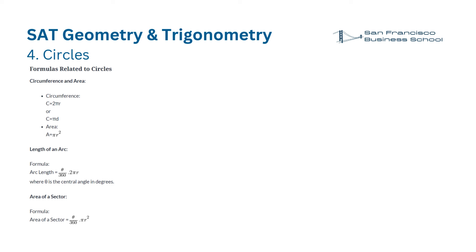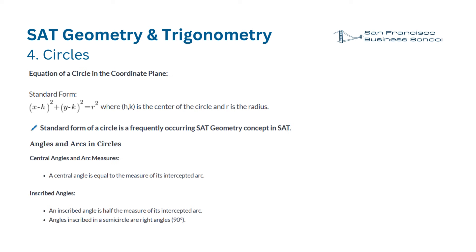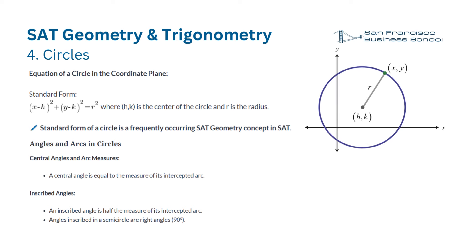Formulas related to circles. Circumference: C equals 2πR, or C equals π times D. Area: A equals π times R squared. Arc length equals θ/360 times 2πR, where θ is the central angle in degrees. Area of a sector equals θ/360 times πR squared. Standard form of a circle in the coordinate plane: (x − h)² + (y − k)² = r², where (h, k) is the center and r is the radius. This standard form is a frequently occurring SAT geometry concept.